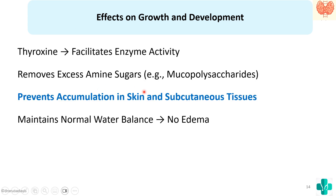Another action of thyroid hormone on growth and development is that it helps in the removal of excess amine sugars like mucopolysaccharides, preventing their accumulation in skin and subcutaneous tissue and thereby maintaining normal water balance — so there is normally no edema. But in hypothyroidism there is no one to remove the excess amine sugars, so there will be accumulation of mucopolysaccharides in the skin and subcutaneous tissue, leading to edema.